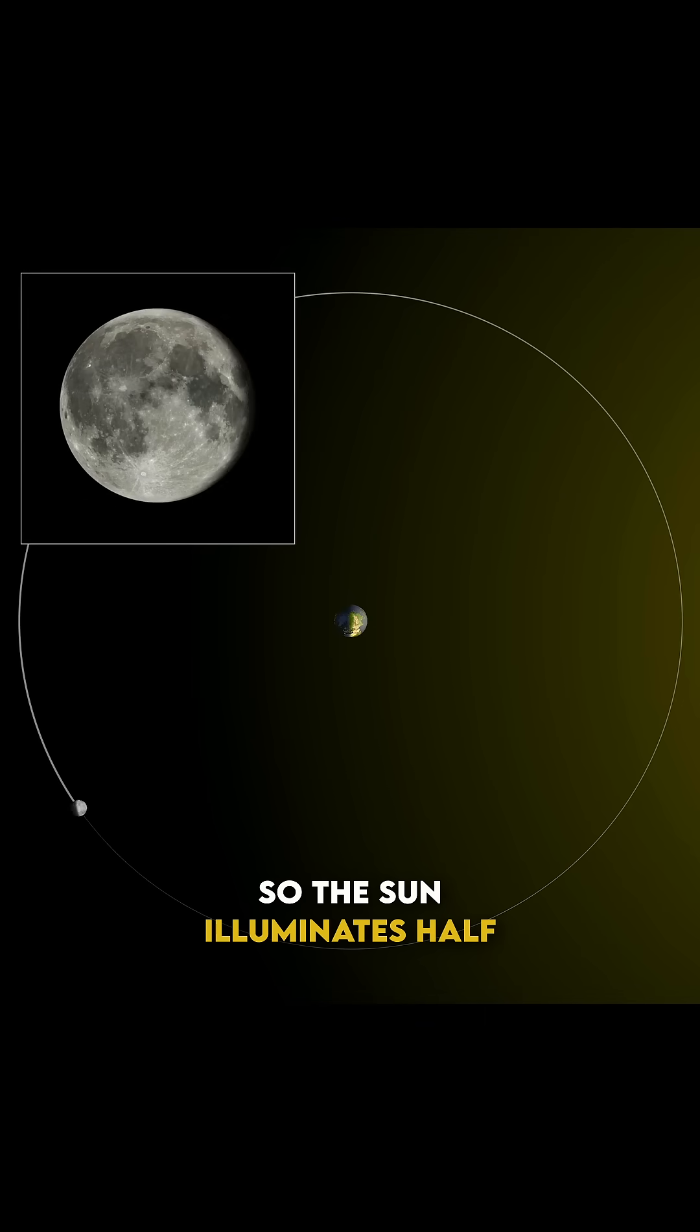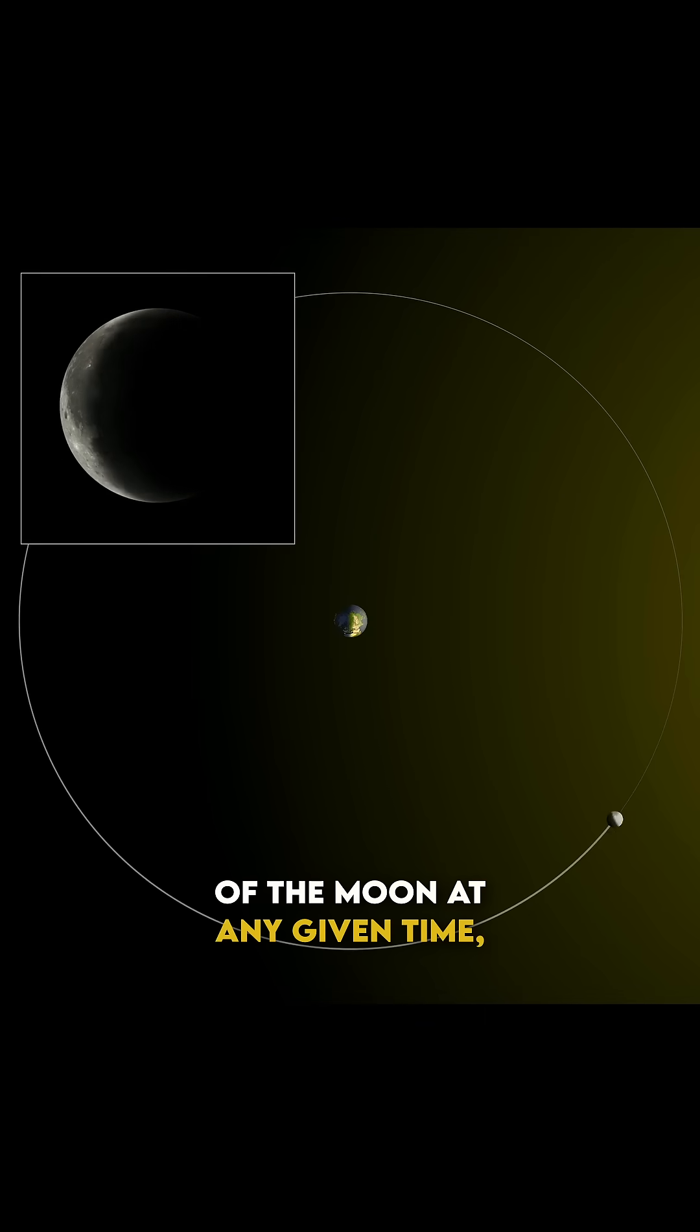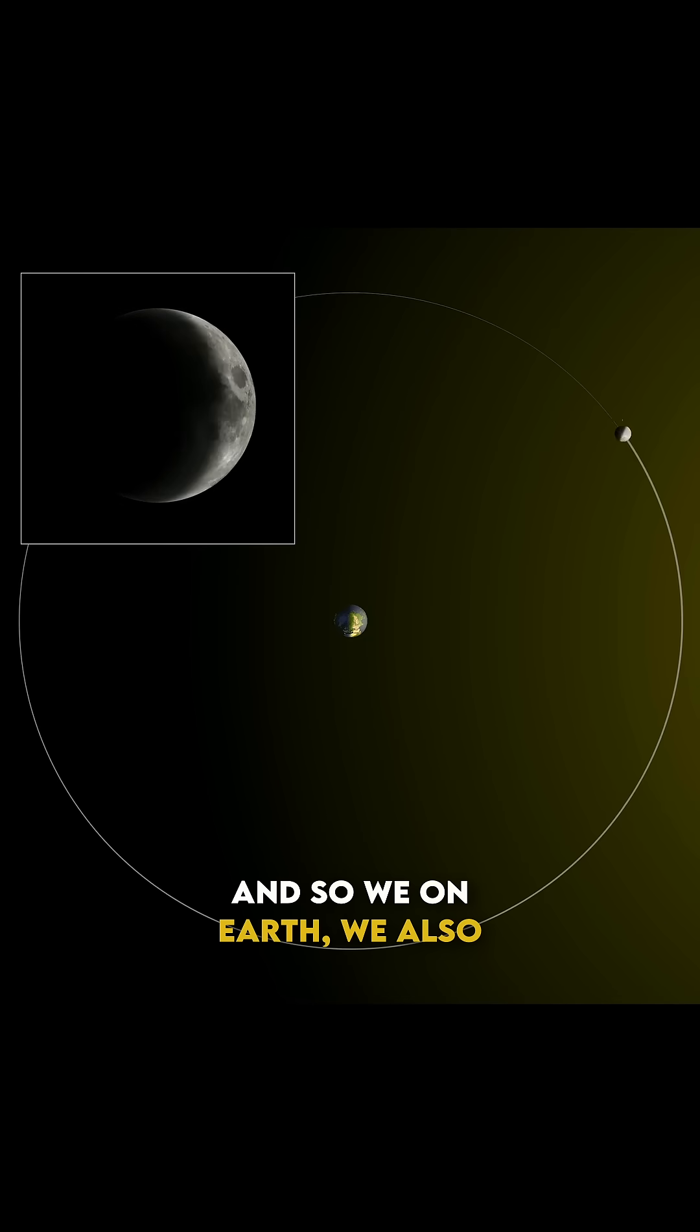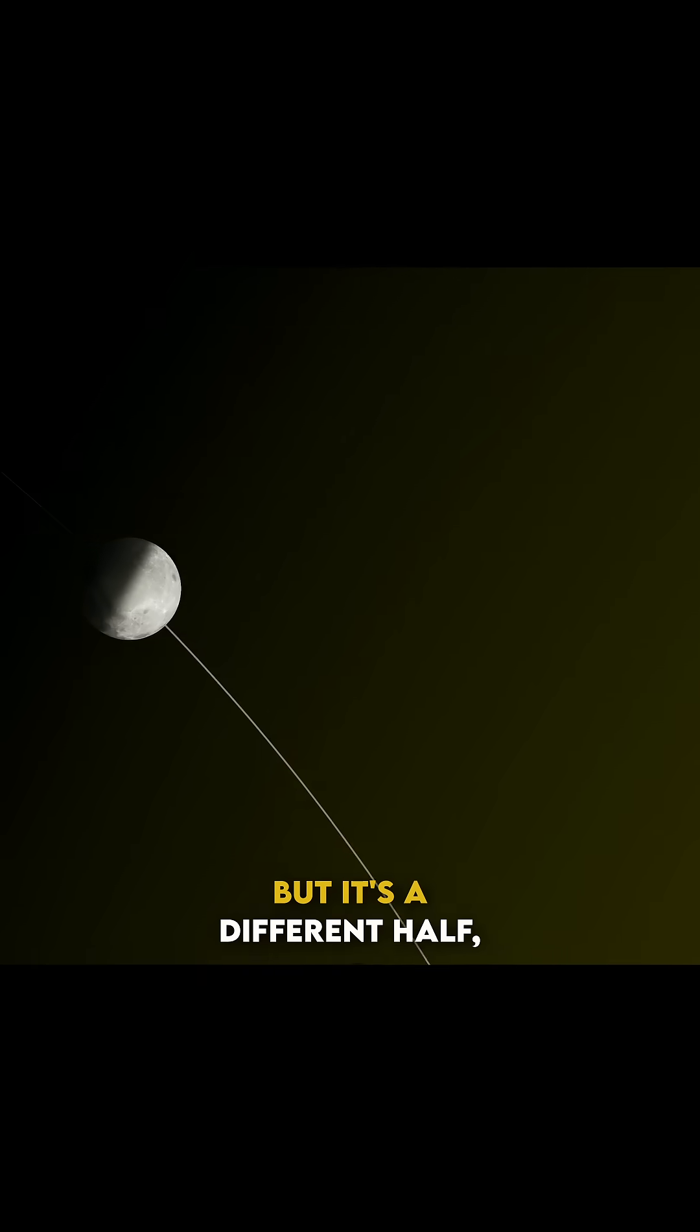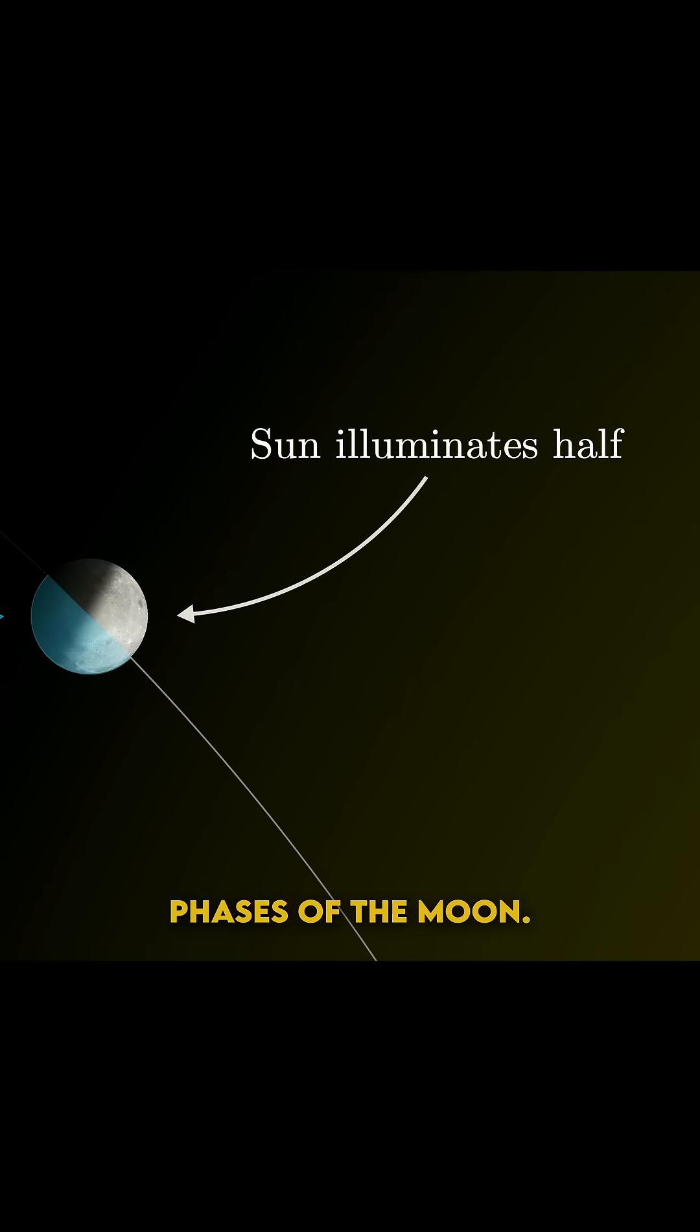So the sun illuminates half of the moon at any given time. And so we on Earth, we also see half the moon, but it's a different half. And so because of that, we get phases of the moon.